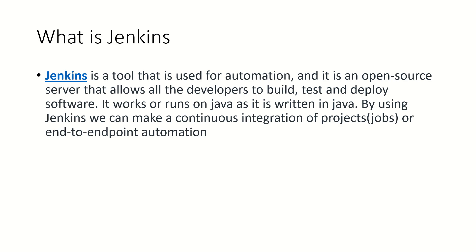Jenkins is a tool that is used for automation. Jenkins is a CI-CD pipeline tool. CI means continuous integration, which means when you are going to commit some changes to Git, it automatically does the build, then does the test, and then deploys it. Whatever changes you are going to push to Git, the same thing will start building, testing, and deploying continuously after the push. That is why it is called continuous integration and continuous deployment.